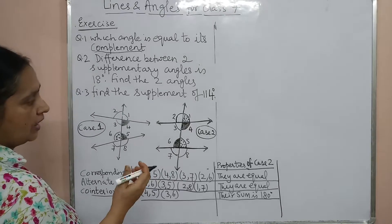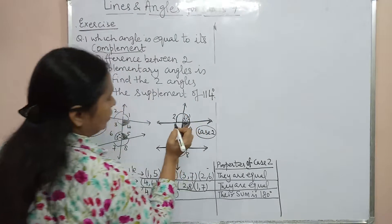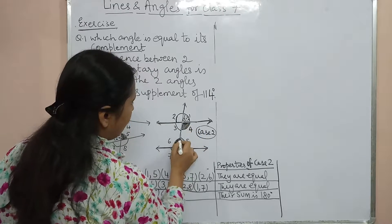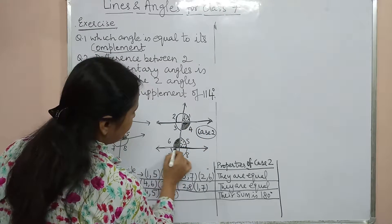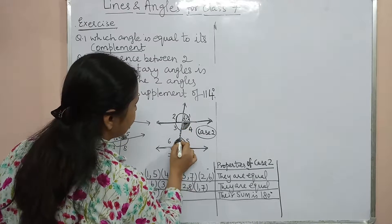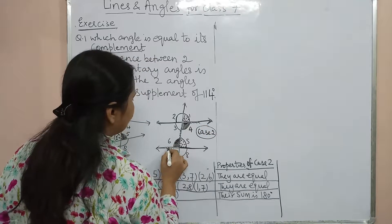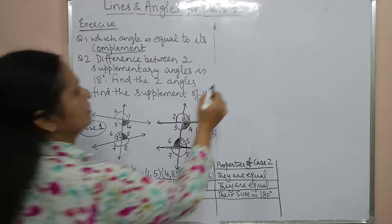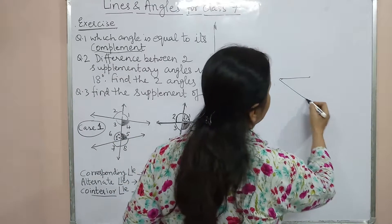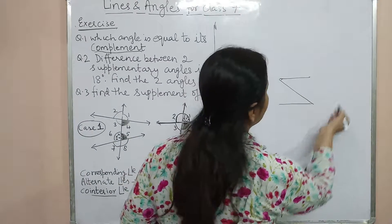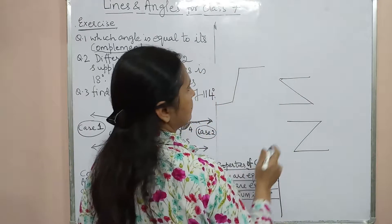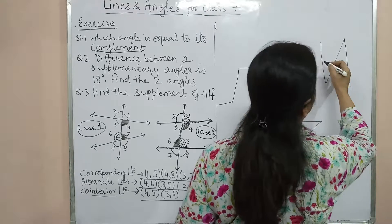One more thing I want to share: visual formations help identify angle pairs. For alternate angles, observe the Z formation — when two parallel lines are cut by a transversal and you see a Z shape, the angles at the corners of the Z are alternate angles.